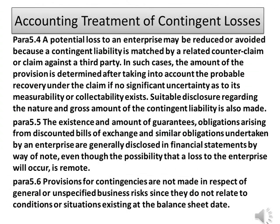Para 5.4: A potential loss to an enterprise may be reduced or avoided because a contingent liability is matched by a related counterclaim or claim against a third party. In such cases, the amount of the provision is determined after taking into account the probable recovery under the claim, if no significant uncertainty as to its measurability or collectability exists. Suitable disclosure regarding the nature and gross amount of a contingent liability is also made. Para 5.5: The existence and amount of guarantees, obligations arising from discounted bills of exchange and similar obligations undertaken by an enterprise are generally disclosed in financial statements by way of note, even though the possibility that a loss to the enterprise will occur is remote. Para 5.6: Provisions for contingencies are not made in respect of general or unspecified business risks since they do not relate to conditions or situations existing at the balance sheet date.